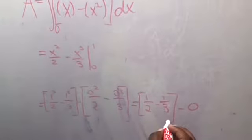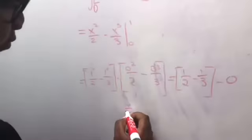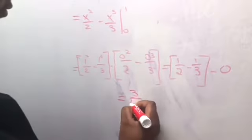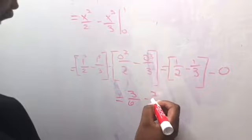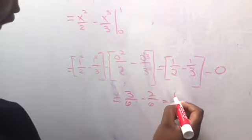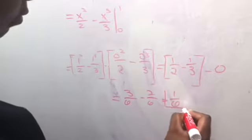So we have fractions, and when subtracting fractions, we have to have a common denominator. So multiplying 1 half by 3 and 1 third by 2, we get 3 sixths minus 2 sixths, which equals 1 sixth.